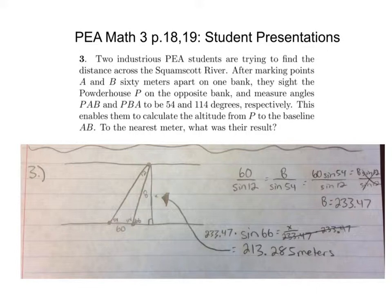Problem three: Two industrious PEA students are trying to find the distance across the Squamscott River. After marking points A and B 60 meters apart on one bank, they cite the powder house P on the opposite bank and measure angles PAB and PBA to be 54 and 114 degrees respectively. This enables them to calculate the altitude from P to the baseline AB to the nearest meter. What was their result?